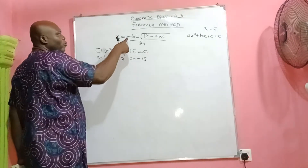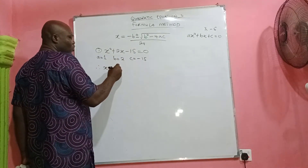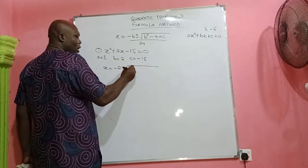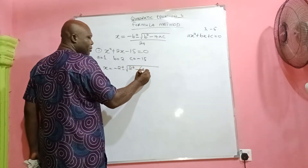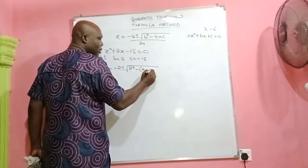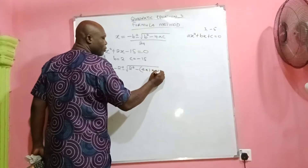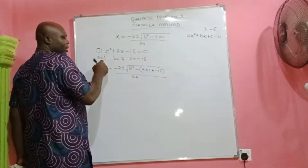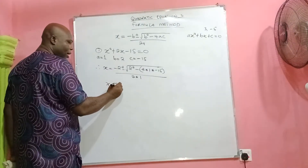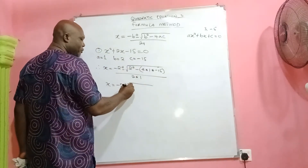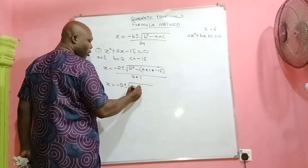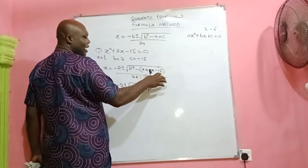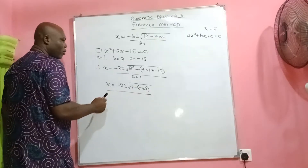Therefore x = −b, that's −2, plus or minus the square root of b squared — b is 2, so that's 2² — minus 4 times a times c. a is 1 and c is −15, so 4 × 1 × (−15) gives us −60. All over 2 times a, which is 2 times 1, giving us 2.